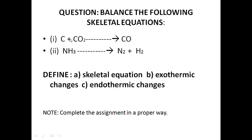Question two: write the balanced equation for the following skeletal equations. First: carbon reacting with carbon dioxide to give carbon monoxide. Second: ammonia gives nitrogen and hydrogen gases respectively after the change. Question three: define skeletal equation, exothermic changes, and endothermic changes. Kindly complete the assignment in a proper way in your notebook.